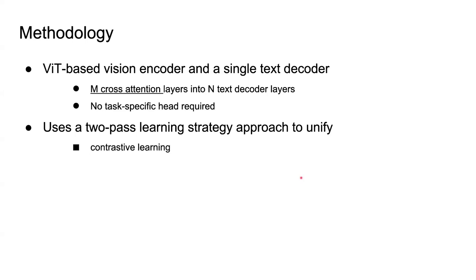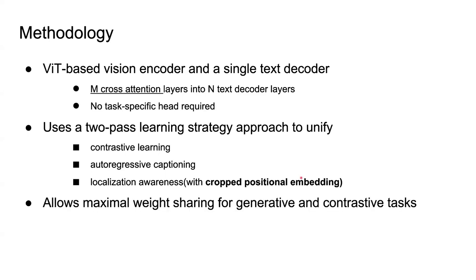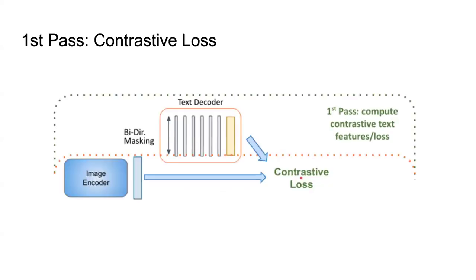MaMMUT uses a two-pass learning strategy to unify both objectives. The first pass deals with contrastive learning, and the second pass deals with the generative or autoregressive captioning part. The model is also localization-aware, achieved with the help of crop positional embedding — another paper from Google Research. Because it only has one decoder, weights are shared, and for pre-training it uses only web alt-text datasets.